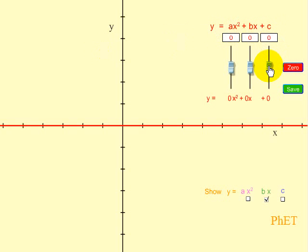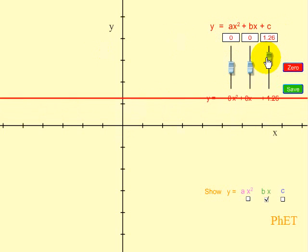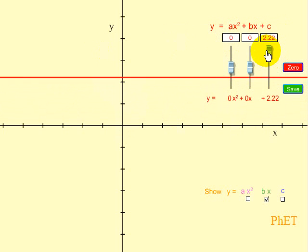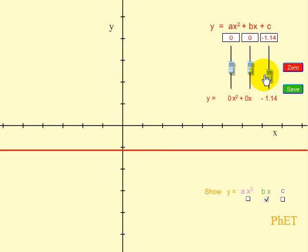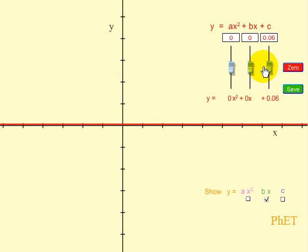So let's move the dial and see what happens with this red line. Everything is zero, so you have this line at zero. We're going to raise it, and we see that the C part of the quadratic equation, the C variable, just raises it up and down. That's what that C part does.